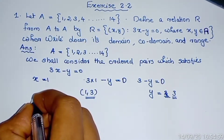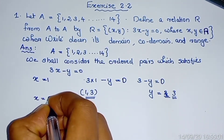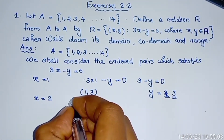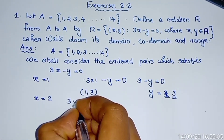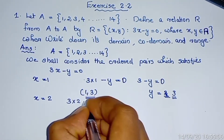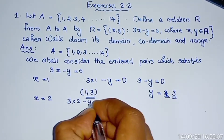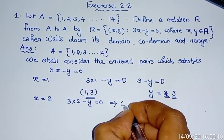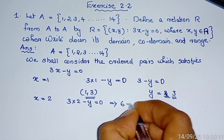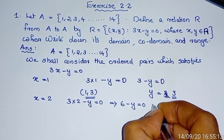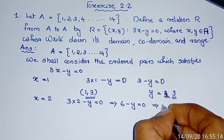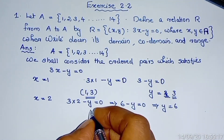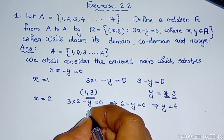When x equals 2: 3 times 2 minus y equals 0, that implies 6 minus y equals 0, implies y equals 6. So the second ordered pair is (2, 6).